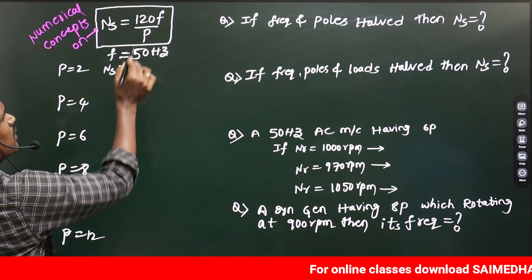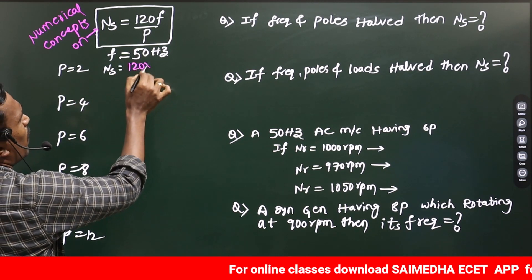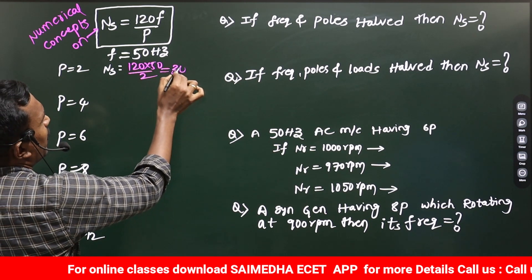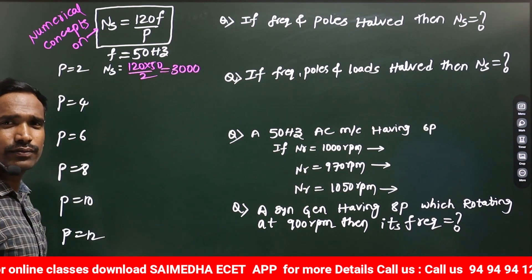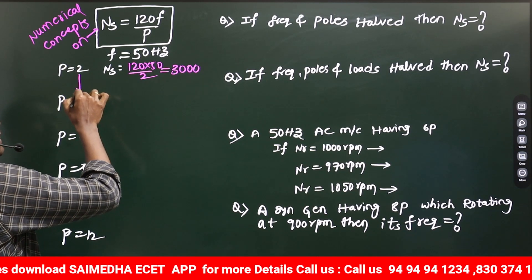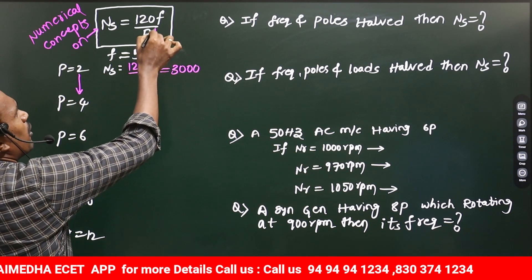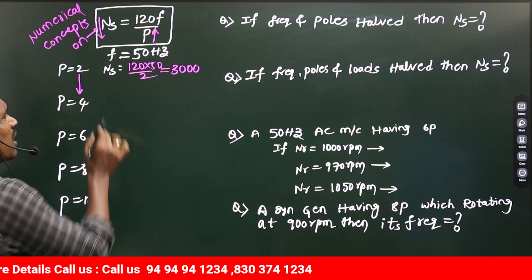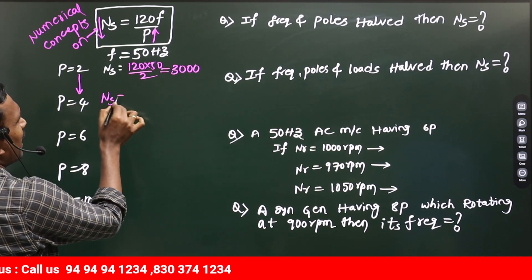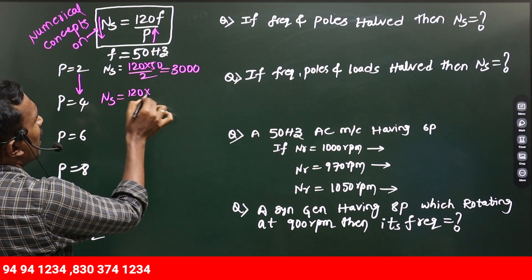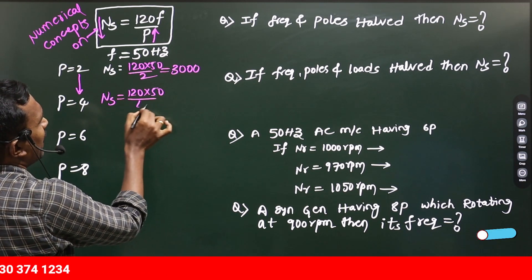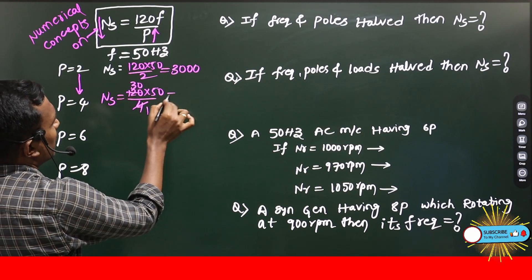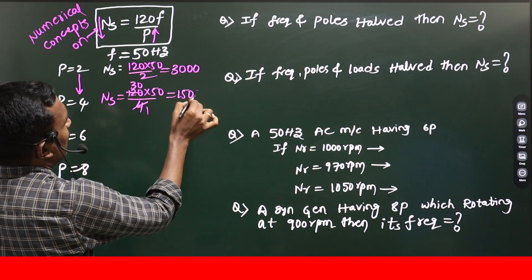For example 2 poles, for 2 poles, 120F by P if you calculate, 3000 is the RPM. If the number of poles doubled, the synchronous speed will be halved. What will be the synchronous speed? NS equals 120F by P, 4 ones are 4, 4 threes are 12. So what will be the answer? 1500 RPM.